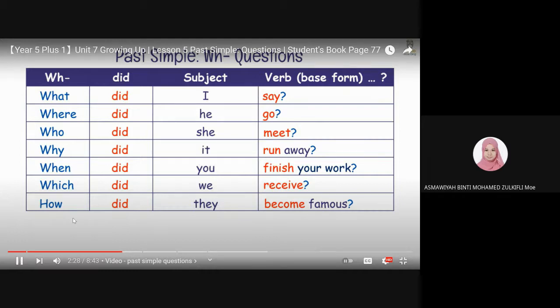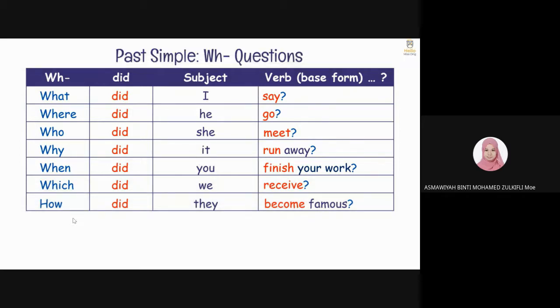We often answer past simple WH questions in a sentence. Remember, when we answer the questions, you have to use the verb in a past simple form. For example, where did he go? He went to Kuala Lumpur.